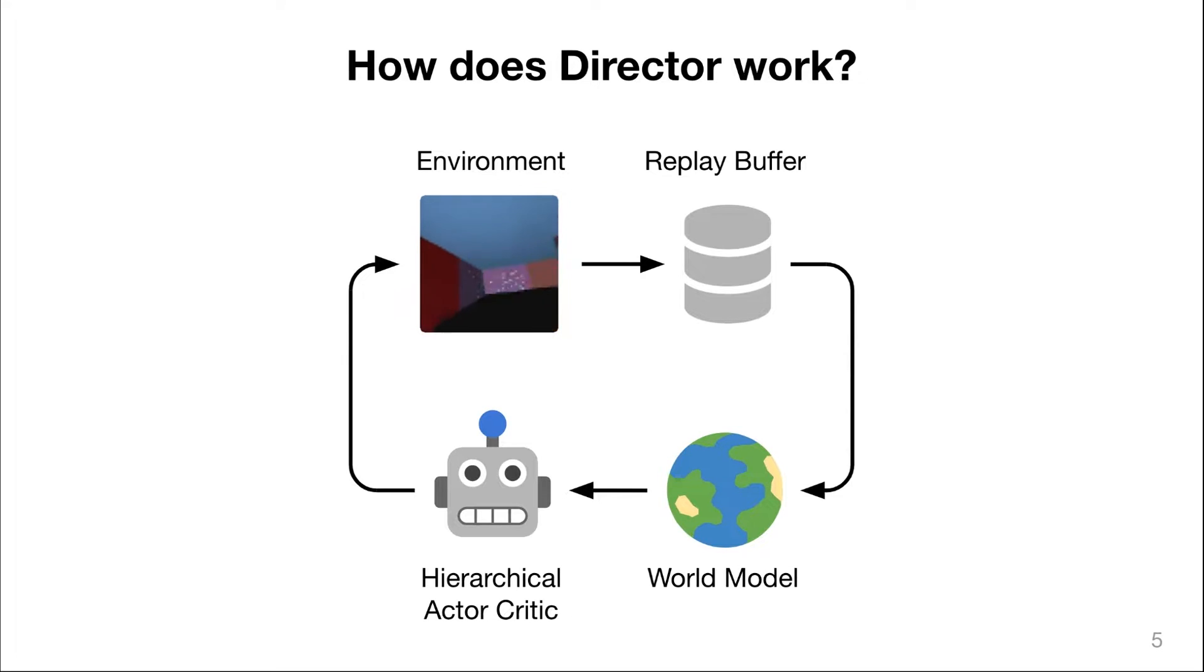How does Director work? At a high level, there is a hierarchical actor-critic that interacts with the environment to collect data that goes into the replay buffer. From the replay buffer, we train the world model, and the world model is then used to generate imagined rollouts to improve the hierarchical actor-critic. These steps are continuously repeated throughout the learning time of the agent.